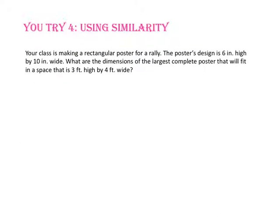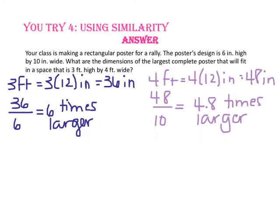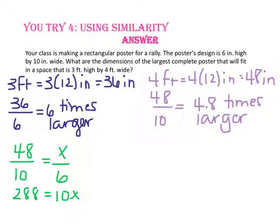Pause the video and do You Try number 4. Your class is using the same design but needs the dimensions of the largest complete poster that will fit in a space that is 3 feet high by 4 feet wide. Start by converting feet to inches. Finding the possible enlargement by dividing the space available by the corresponding height or width, the greatest enlargement is 4.8 times. Using cross products property, we get 288 equals 10X; dividing both sides by 10, X equals 28.8. The largest poster that will fit is 28.8 inches by 48 inches.